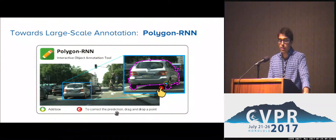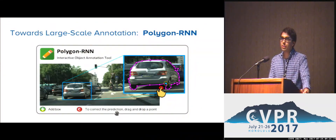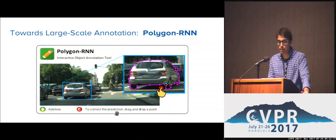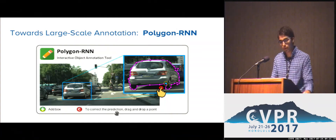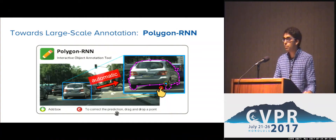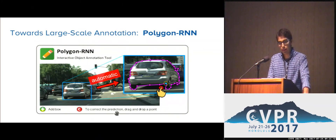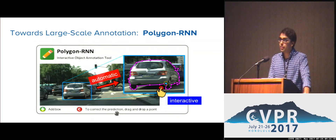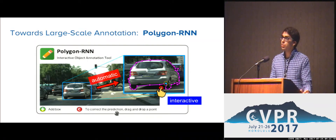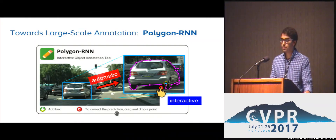In this work, I'm going to present Polygon RNN, which is an instance segmentation model designed to make annotation cheap and easy. Polygon RNN automatically generates predictions in the form of polygons. More importantly, our model is interactive — it accepts users' modifications, which are used to improve its predictions.